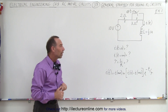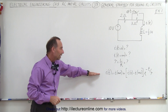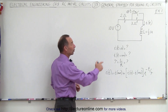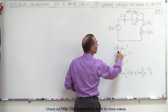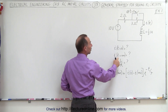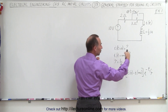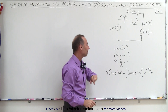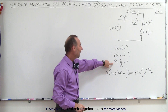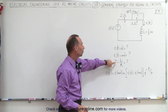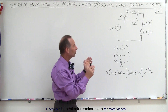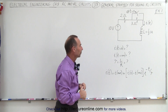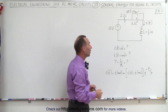So we want to come up with an equation that describes the current in that circuit as a function of time. This was the general equation we found in the last couple of videos. The approach is to find the current through the inductor at time equals zero, the current through the inductor after a long time has passed — at least five time constants — and then we need to find the time constant, which is the inductance divided by the resistance affecting the current through the inductor.